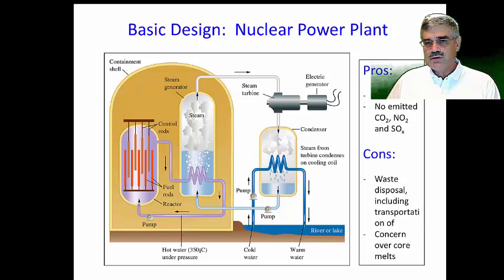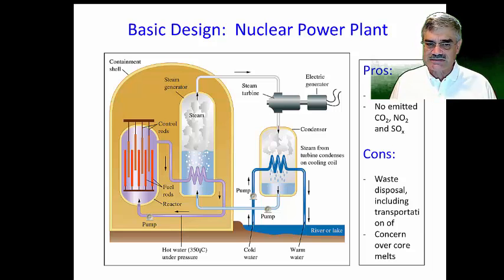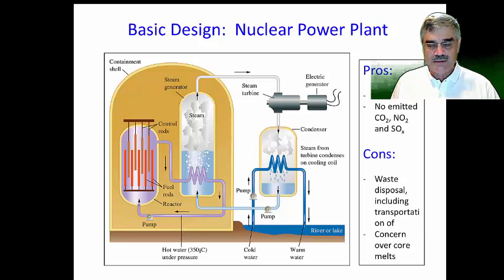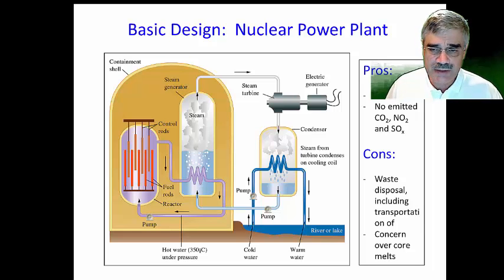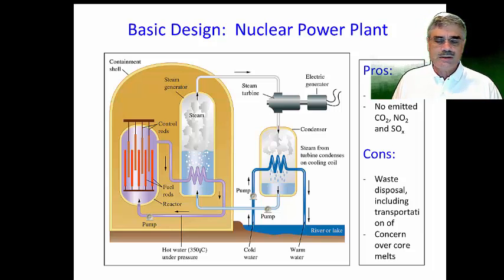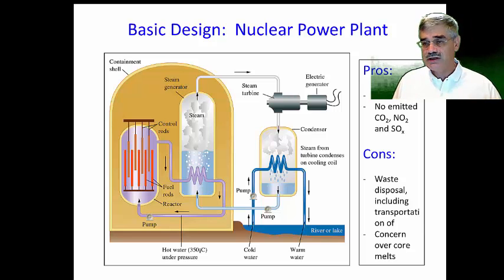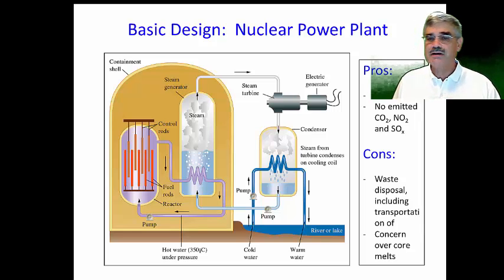Some pros of nuclear power plants are that they are very energy efficient. It takes about 50,000 times less uranium-235 by mass to generate electricity for a city compared to oil or coal, because nuclear reactions release much more energy per mass of fuel than combustion of hydrocarbons. Also, there are no emitted gases such as carbon dioxide, nitrogen dioxide, or sulfur oxides, which contribute to global warming, the greenhouse effect, or acid rain.